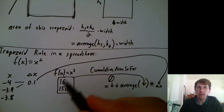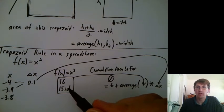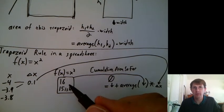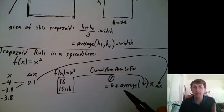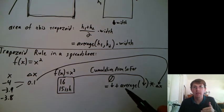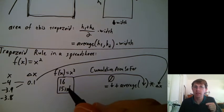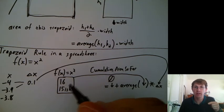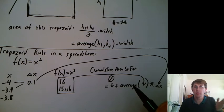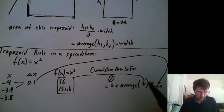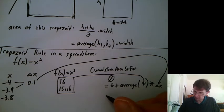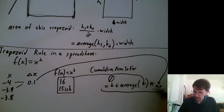If you wanted to do left, instead of taking the average of these two, you would just take the first one, because the left comes first in our usual number line. If you want to do the right side method, instead of saying average, you would just use the 15-ish, not the 16 or the average. So it makes it easy to switch from left, right, and trapezoid by thinking about it this way. And then you would just take that and fill down.